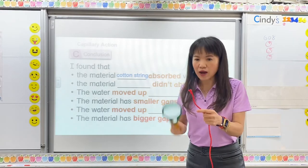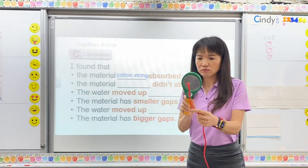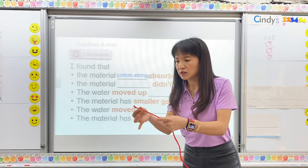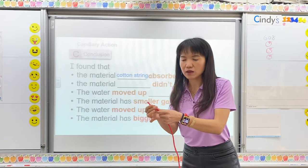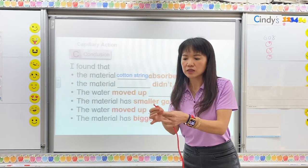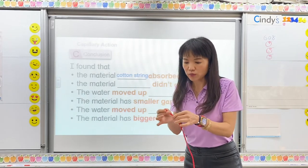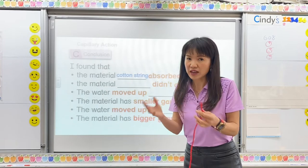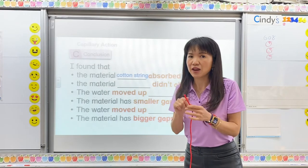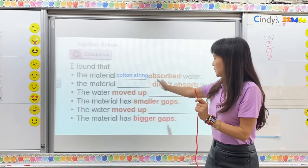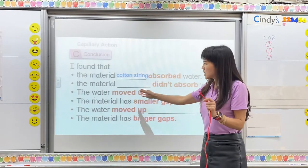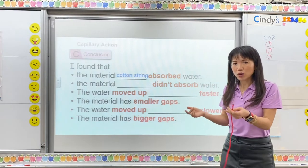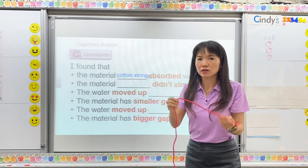Can you tell me why? 很棒. You say 滑滑的, right? It's smooth. So there are bigger gaps inside the fiber, and the water moved up — 水位上升.